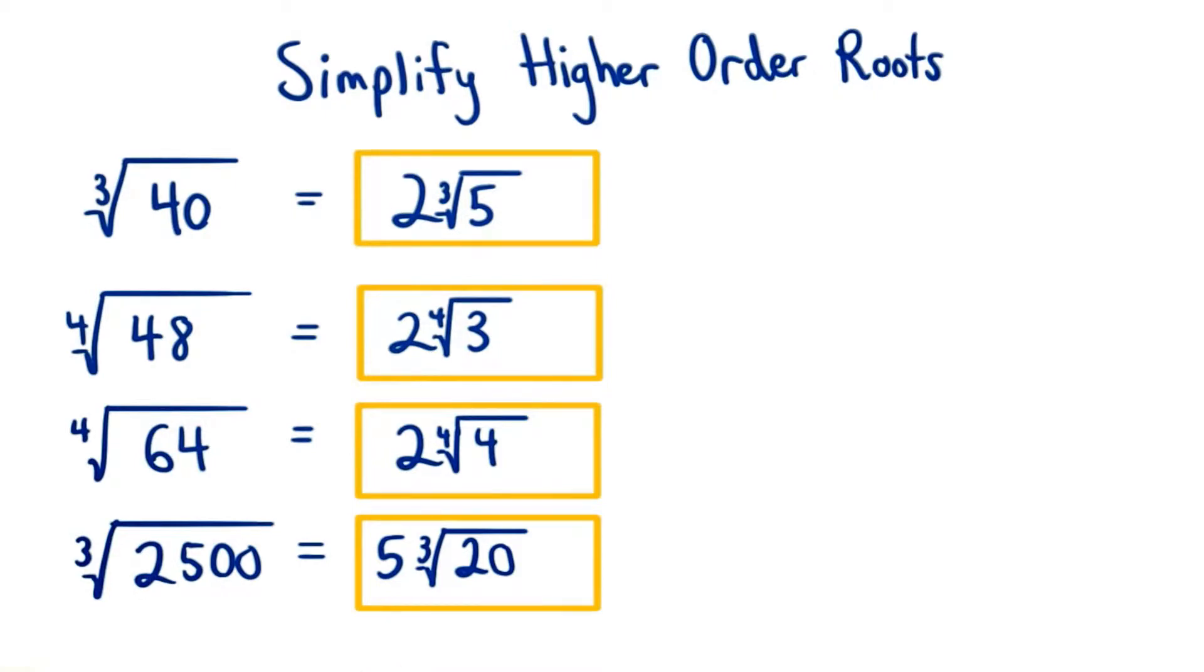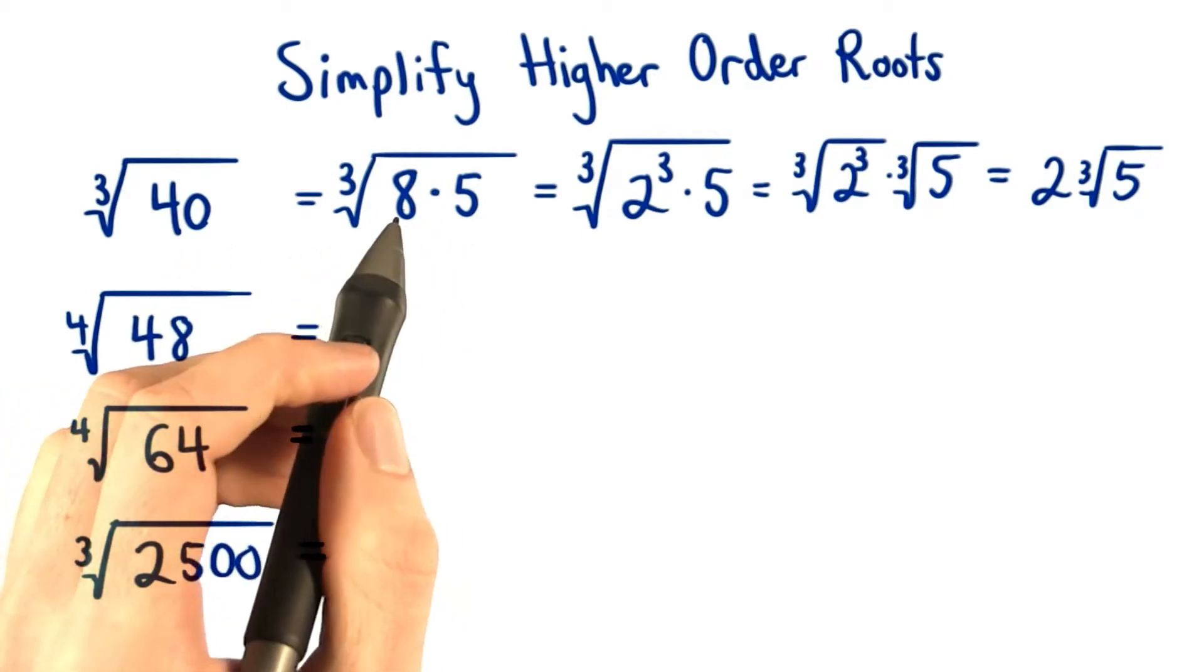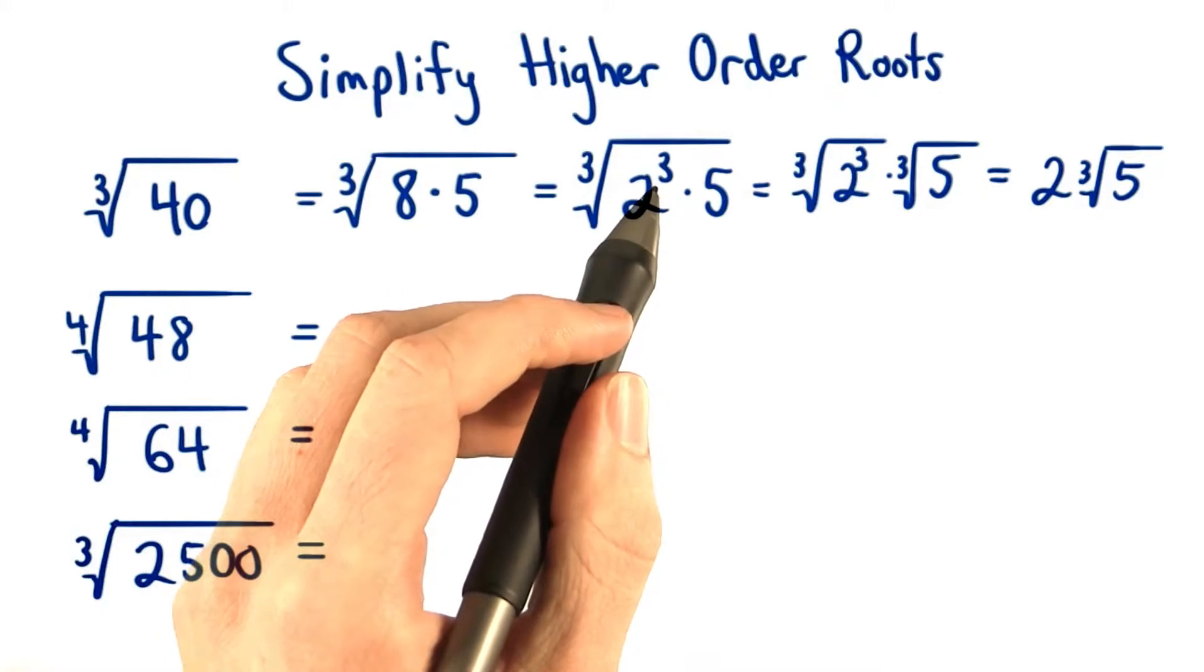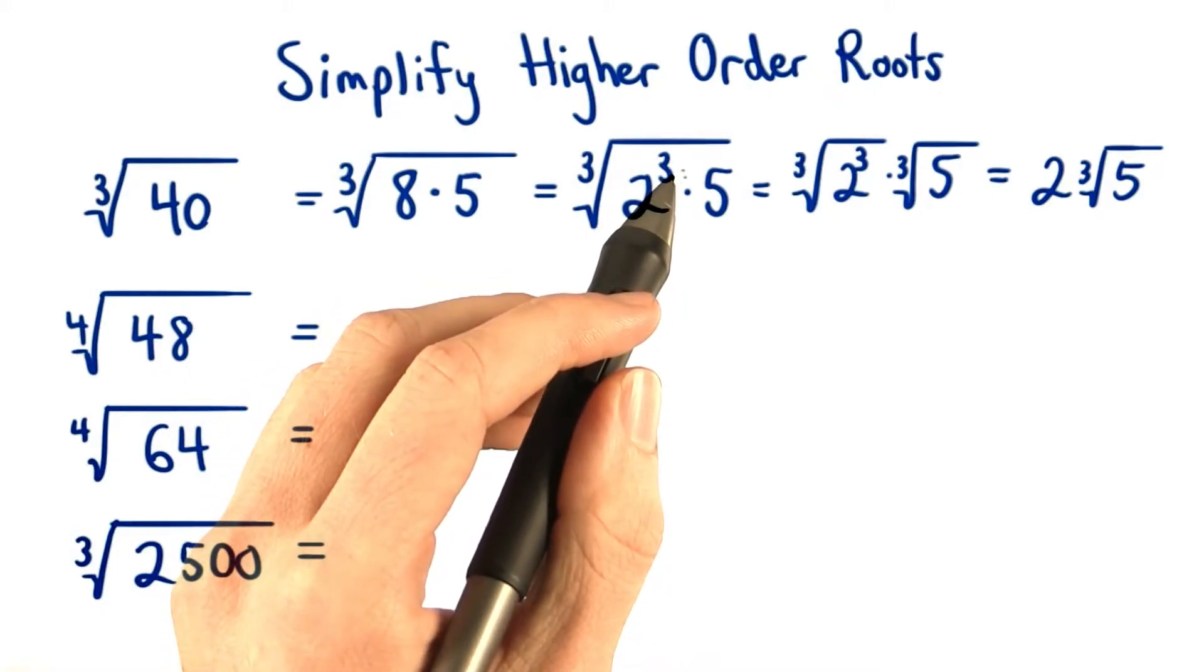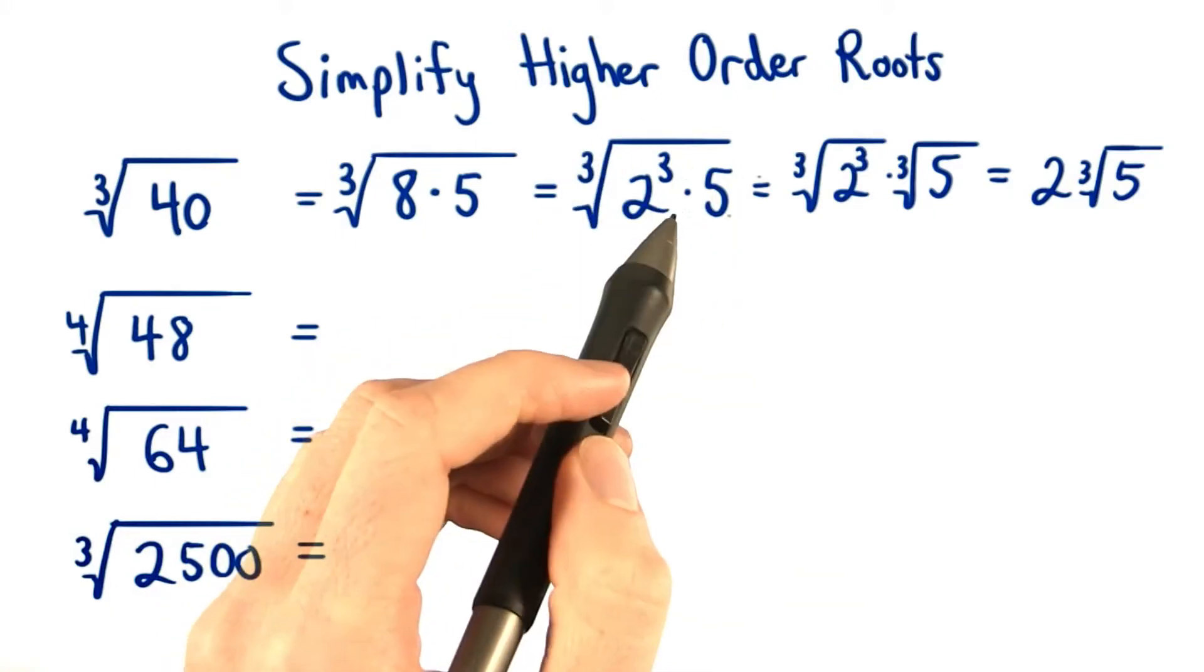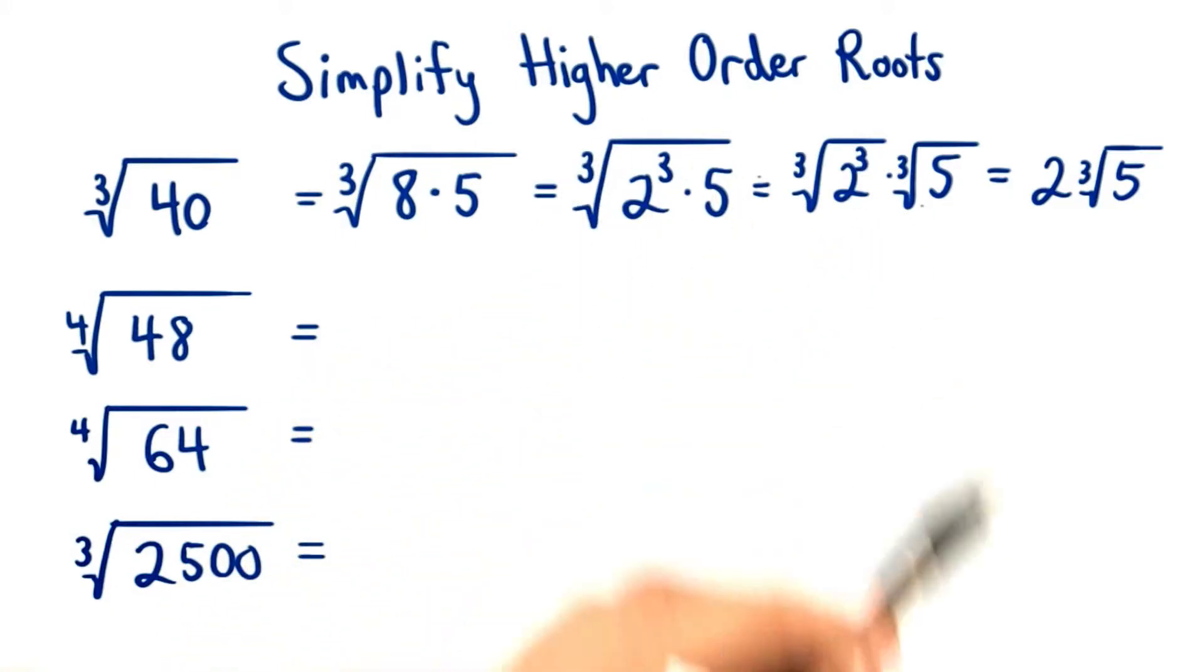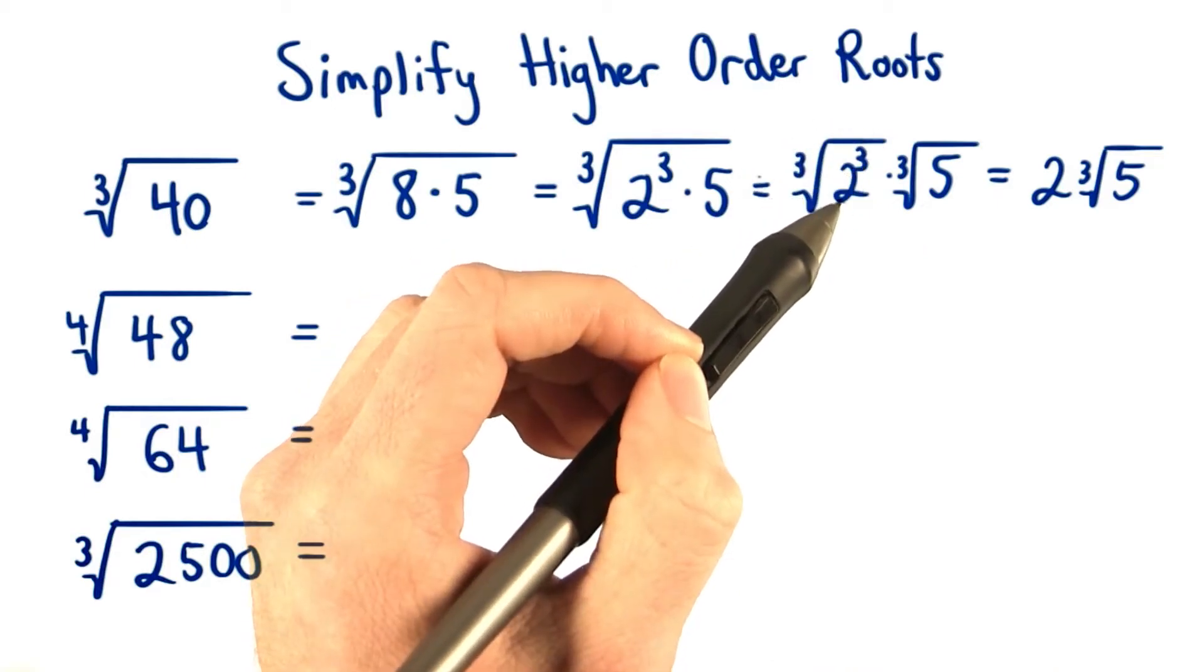Fantastic work for getting at least three of those correct. These were pretty tough. For the first one, we can rewrite 40 as 8 times 5. 8 is the same as 2 cubed, so now we have a perfect cube, a factor that appears three times within our radical. We can use the product rule to split this radical into the product of two radicals. We know that a cube root undoes a cubed power, so we're left with just 2 here.